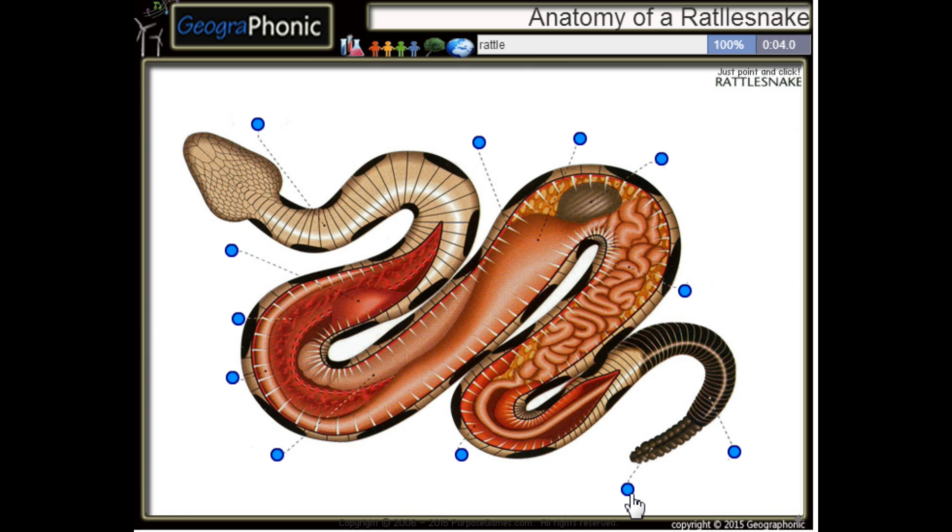This is the rattle of the snake. Here we see a belly scale. This is of course its tail.